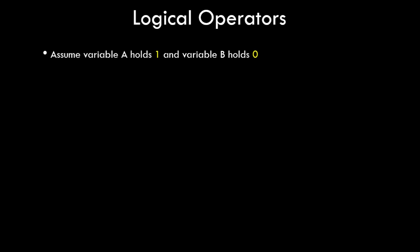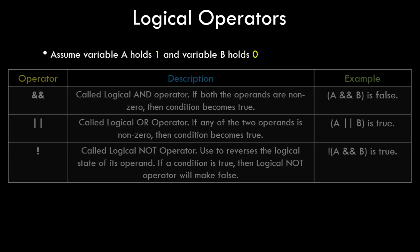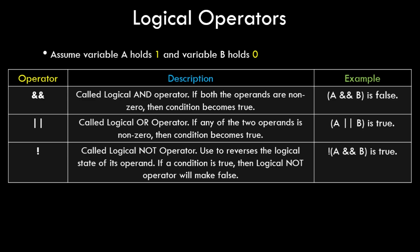The next type is logical operators. Here variable a holds binary value 1 and variable b holds binary value 0. Logical AND (&&) returns true only if both variables are 1 — since a is 1 and b is 0, the output is false. Logical OR (||) returns true if any variable is 1 — here a is 1, so the output is true. The logical NOT (!) operator reverses the output: since a AND b is false, applying NOT makes it true.